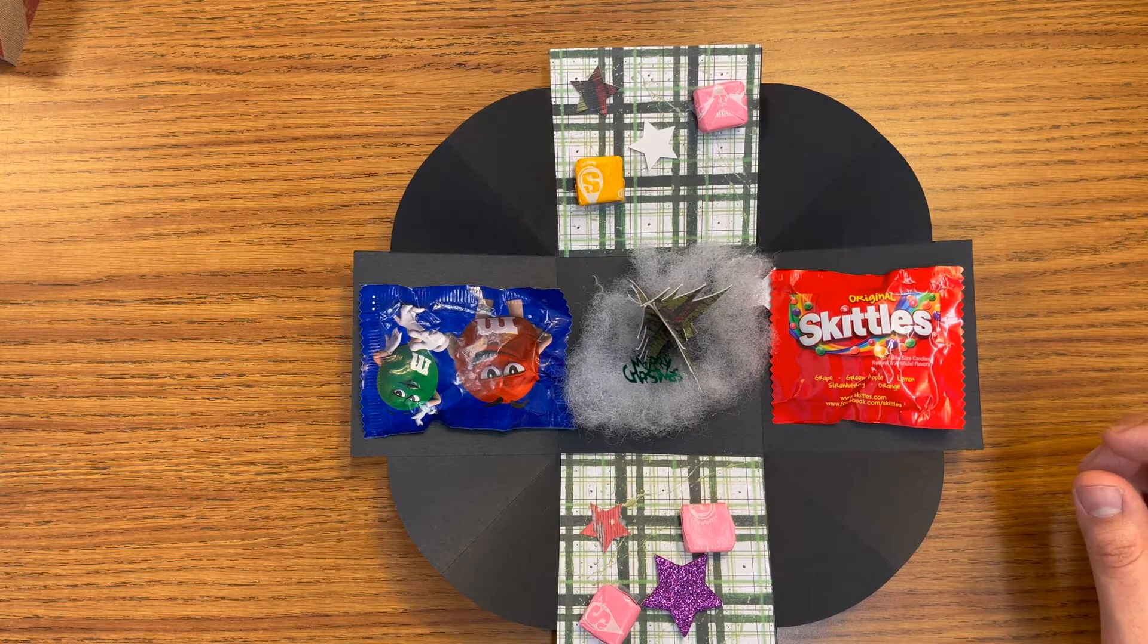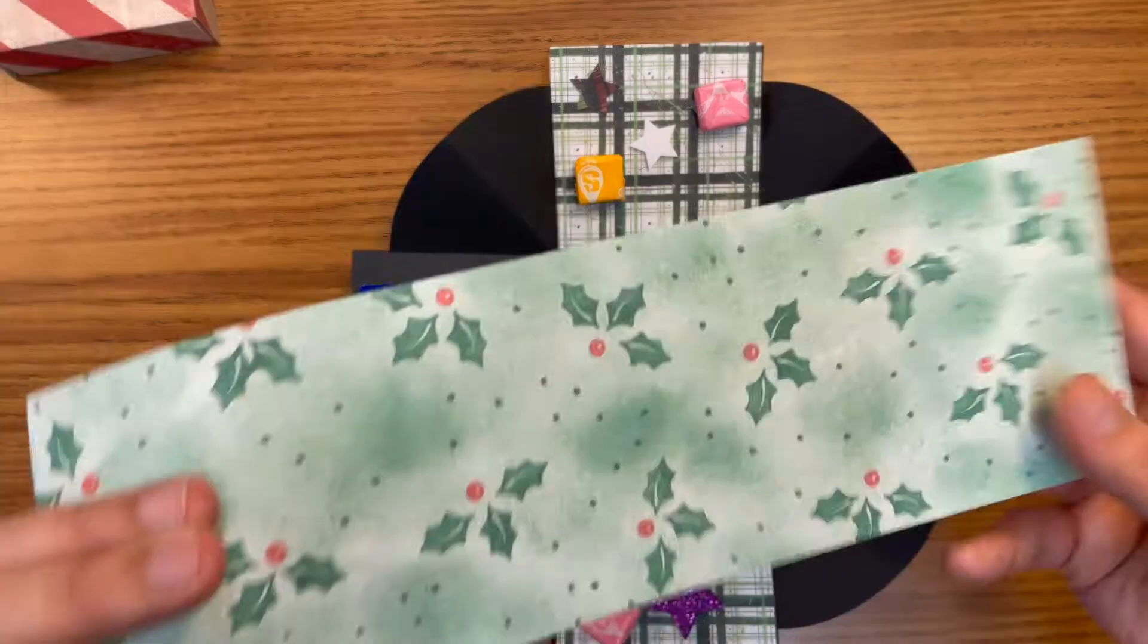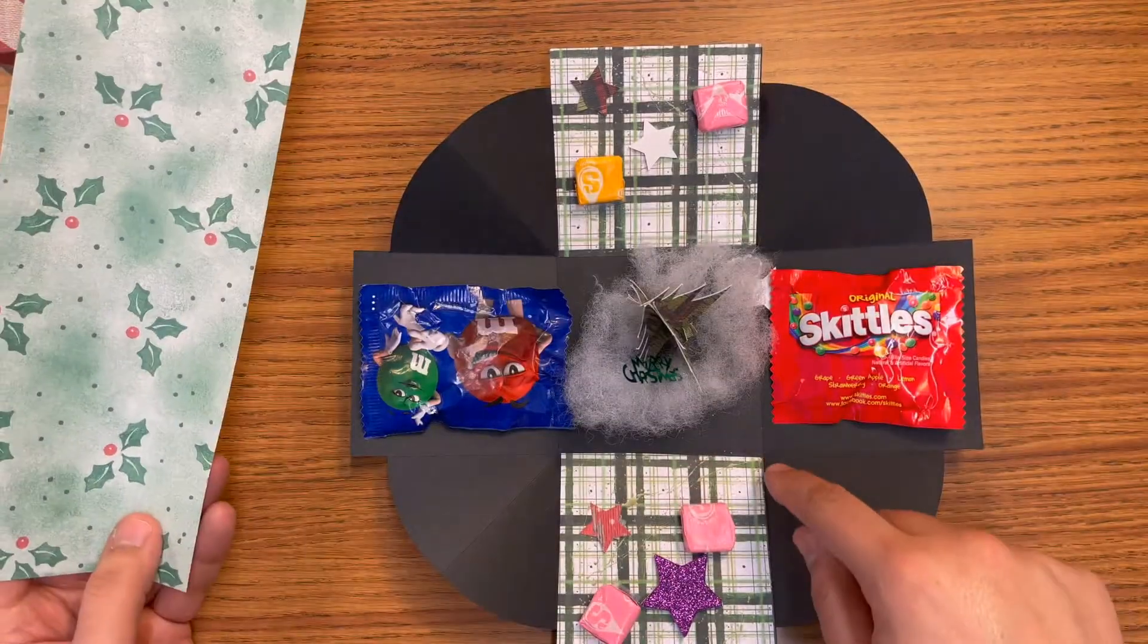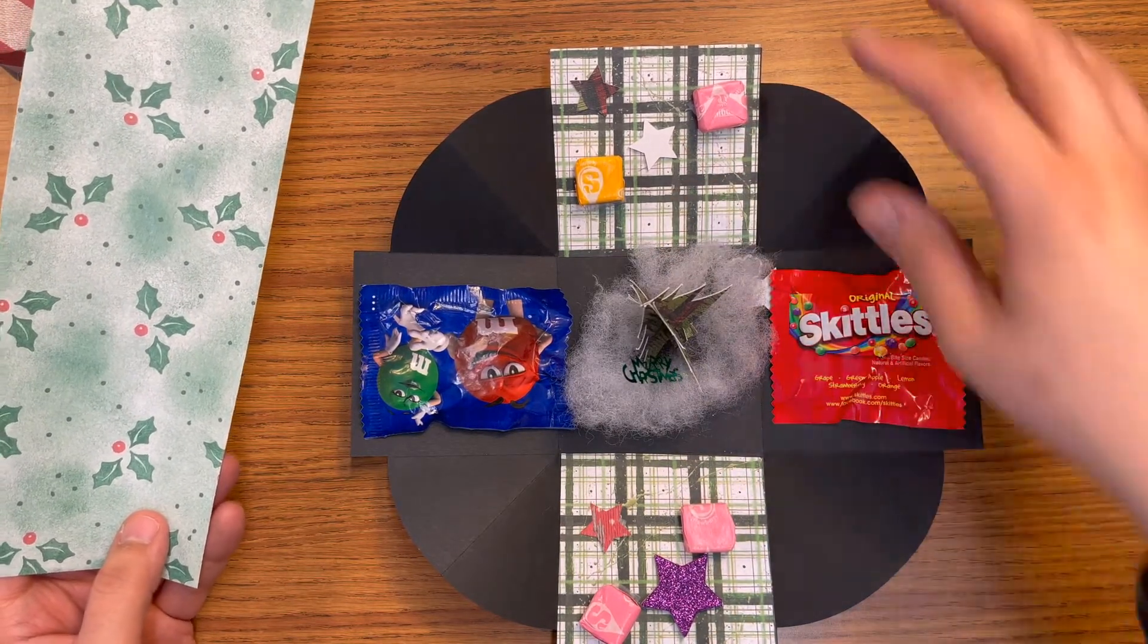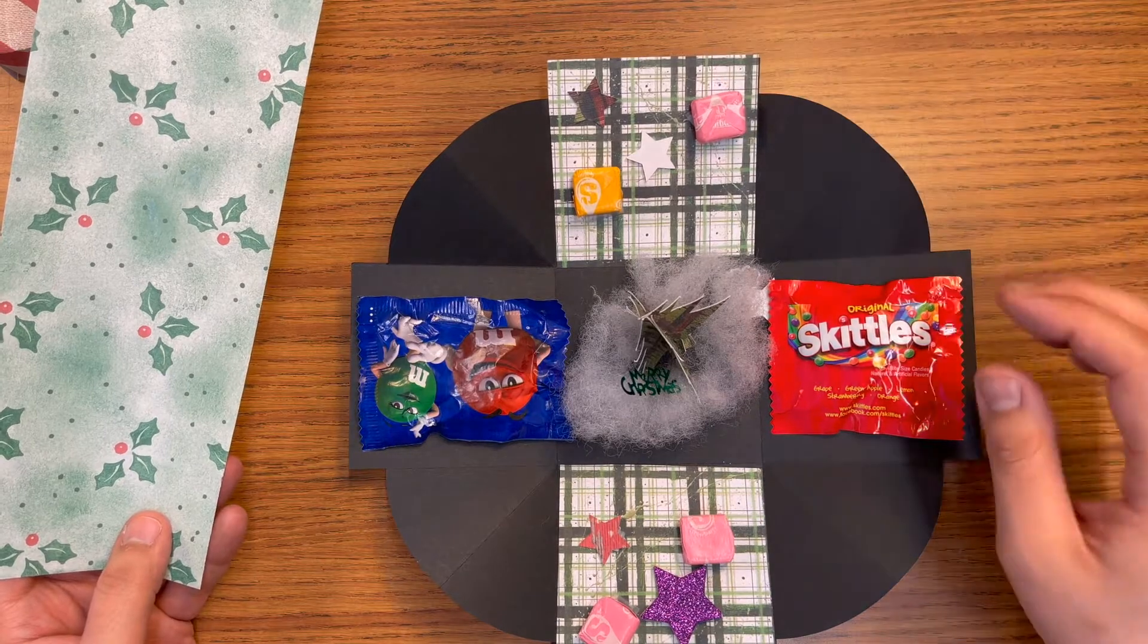And we also have the scrapbook paper. And the way we used it for this box is by cutting it down to two squares and then we glued them on.